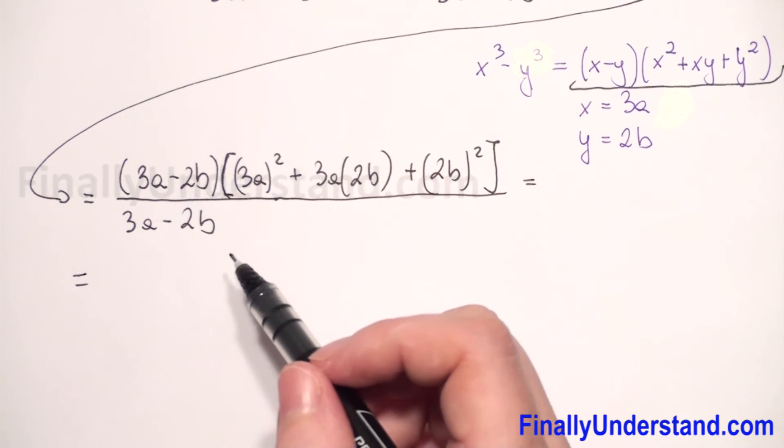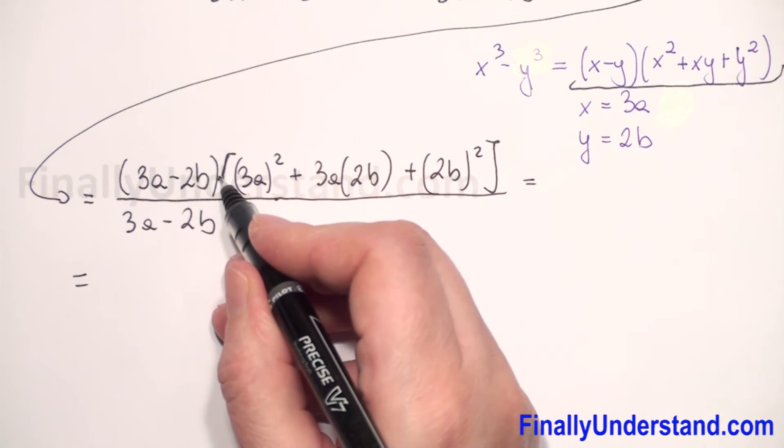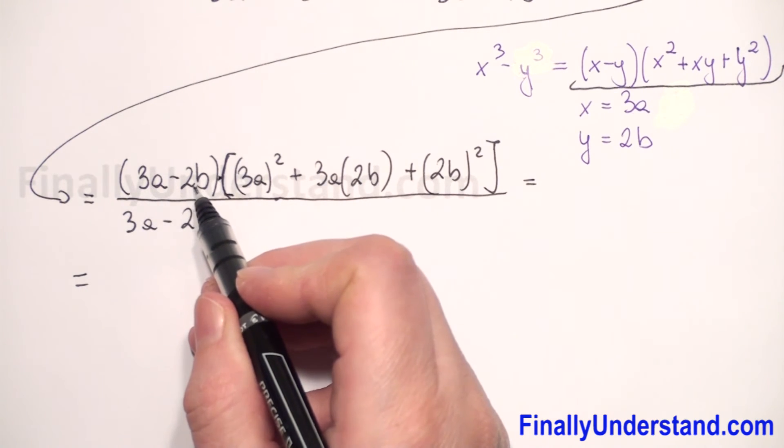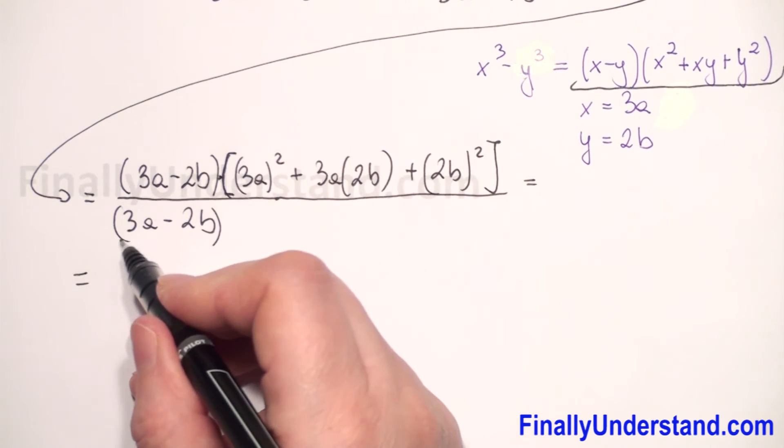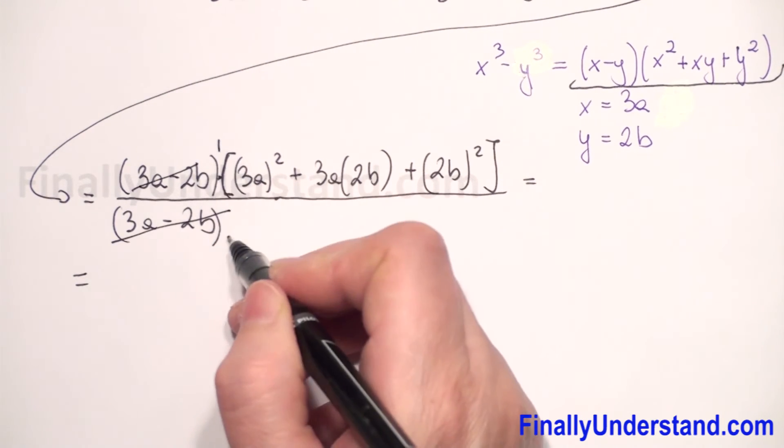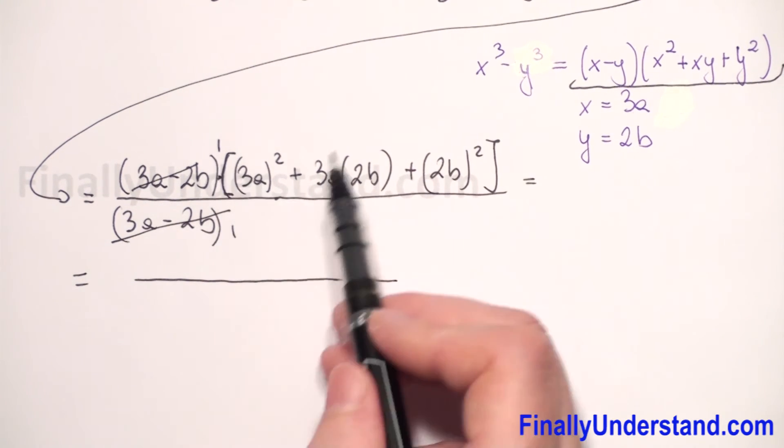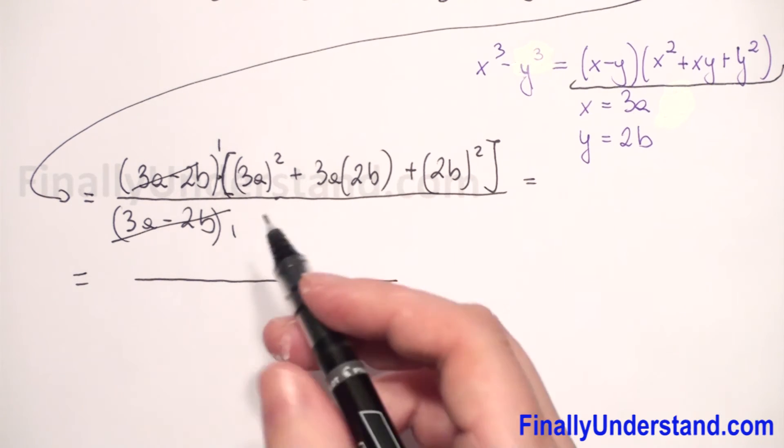Now we see that we have here in numerator multiplication. When we have multiplication, we can reduce. We have 3a minus 2b in the numerator, so we can cancel out. This is 1 and 1. So we will have now in the numerator, the same expression in the brackets.